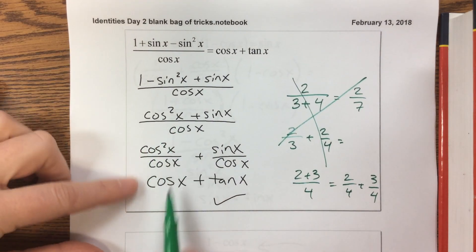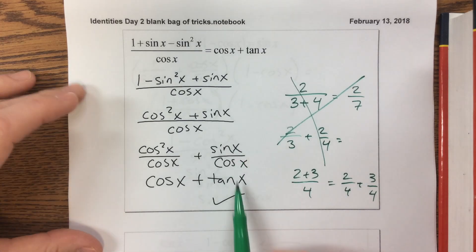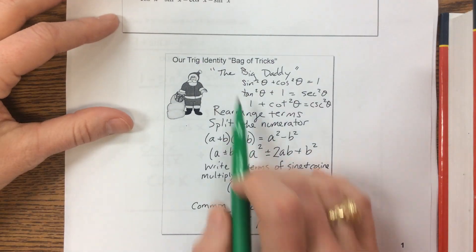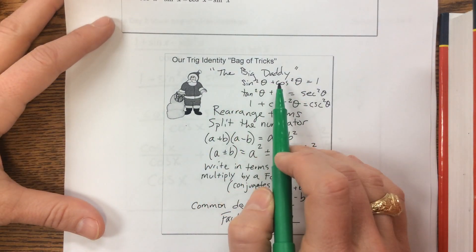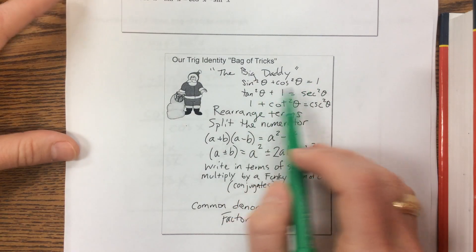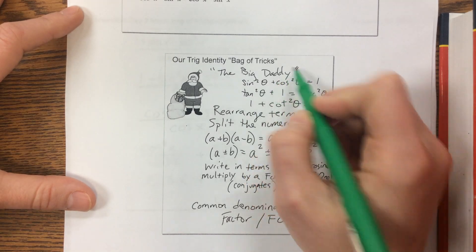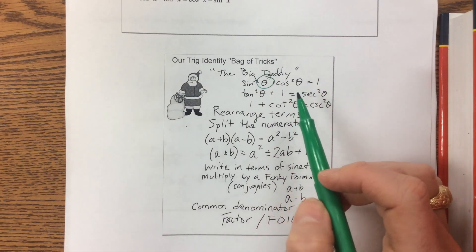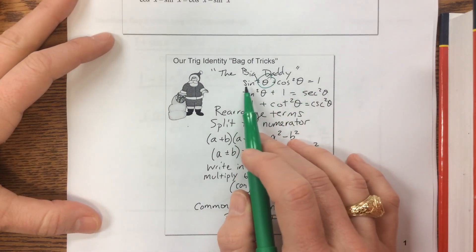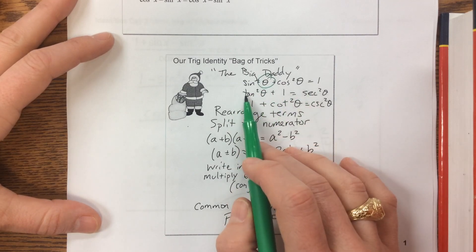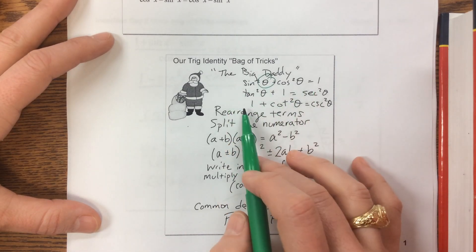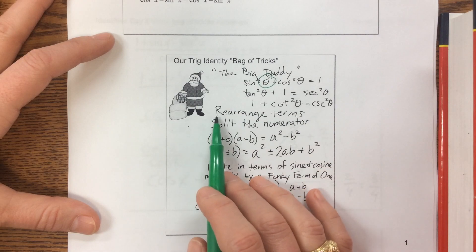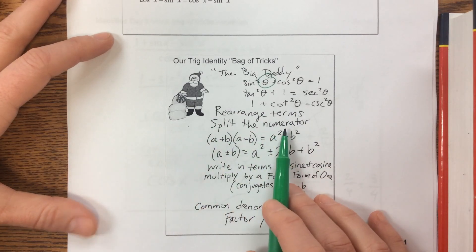So once we split the numerator, then we, this simplified down to cosine of x and sine over cosine is tangent. So the strategies that we wrote down from that one, where we wrote down the big daddy, we like to give it a nickname, and that's that sine squared x plus cosine squared, or theta, whatever, is equal to 1. Don't forget your variables. So if you don't have theta, you can't change it throughout, so pick a variable, preferably the one I give you, and stay with it. And then when you divide through by cosine squared, you get this one, and when you divide the original by sine squared, you get this. The other thing that we wrote down from that first example was to rearrange terms, and then we wrote down split the numerator.